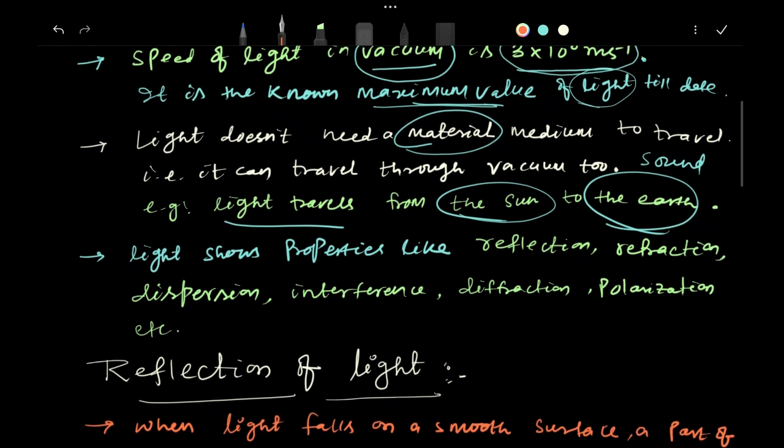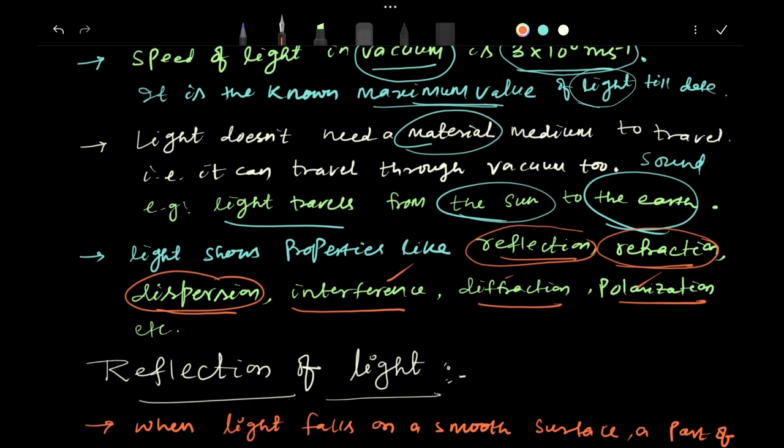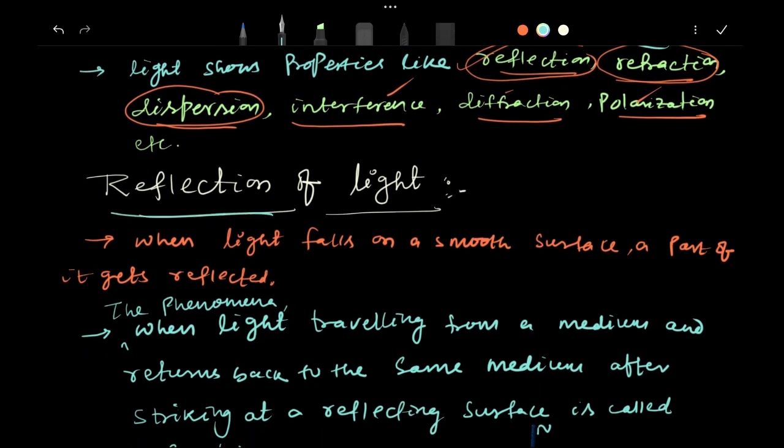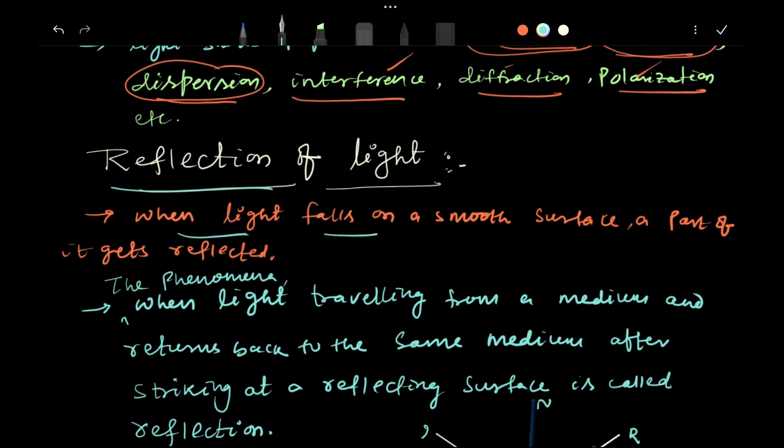The light also shows properties like reflection, refraction, dispersion, interference, diffraction, polarization. In your syllabus you have these three. When you will go to class 12th, you will read about them. Just know the name. Let's start with this concept of reflection of light.